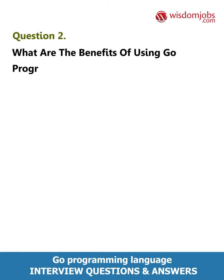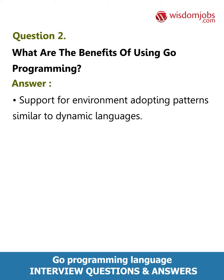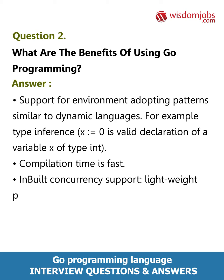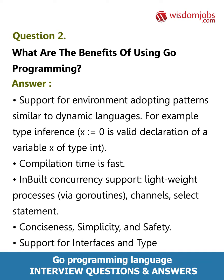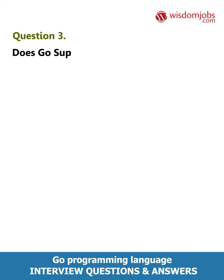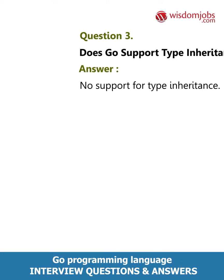Question 2: What are the benefits of using Go programming? Answer: Support for environment adopting patterns similar to dynamic languages, for example type inference — x equals 0 as valid declaration of a variable x of type int. Compilation time is fast. Inbuilt concurrency support via lightweight processes — goroutines, channels, select statement. Conciseness, simplicity, and safety. Support for interfaces and type embedding. Production of statically linked native binaries without external dependencies.